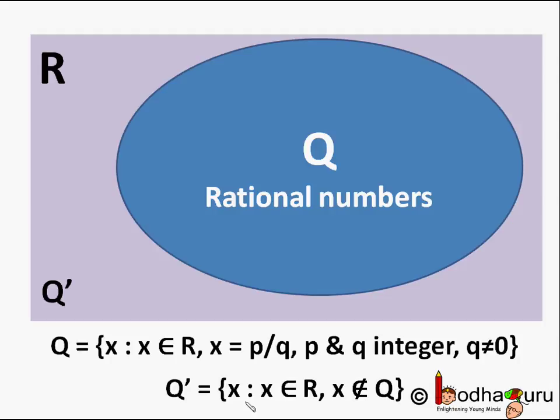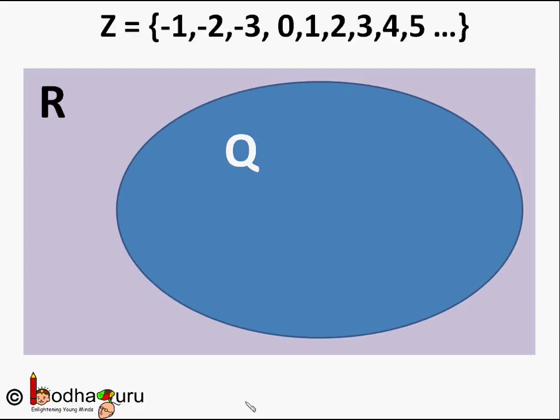For example, numbers like square root of 2 and square root of 3 are irrational numbers, not part of Q but part of R.